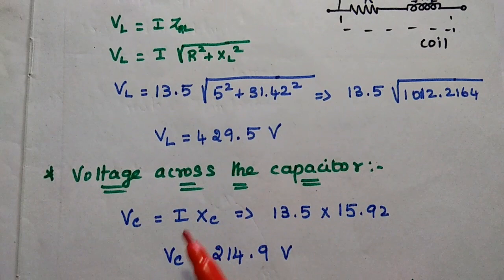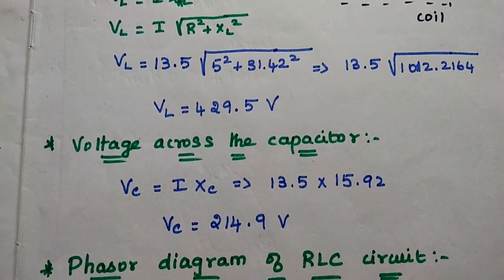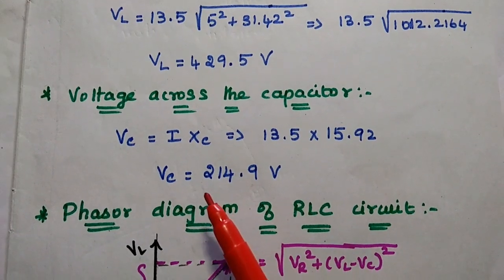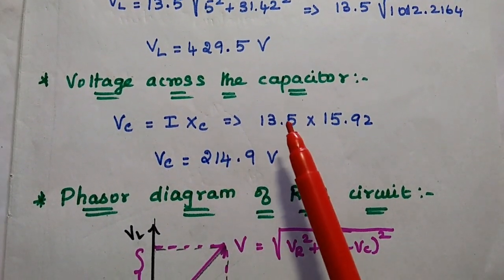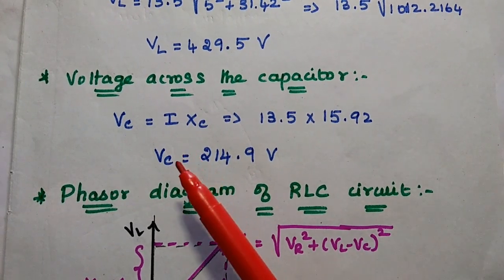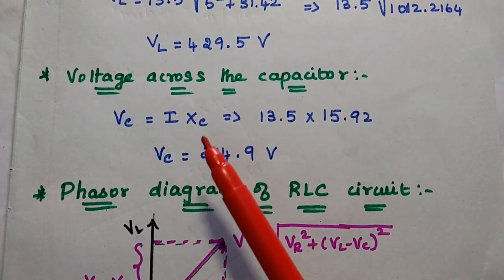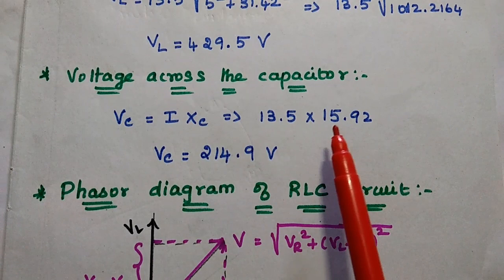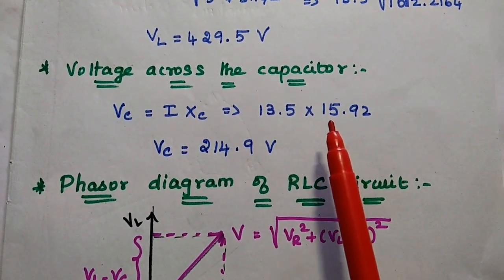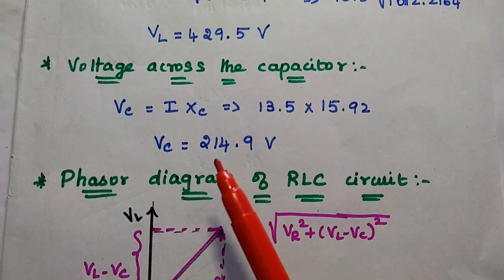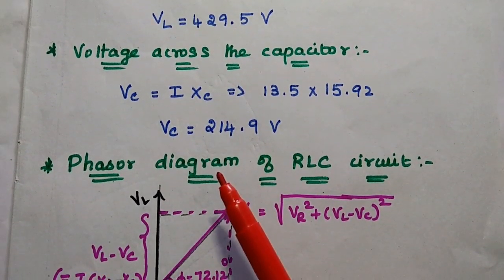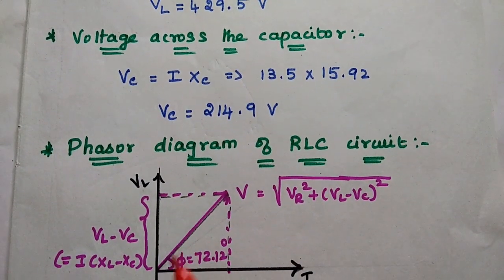Similarly, we can find out the voltage drop across the capacitor. Here VC is equal to I into XC, where XC is 15.92 — that is the capacitive reactance. Then we can get the value as 214.9 volt, which is the voltage drop across the capacitor.